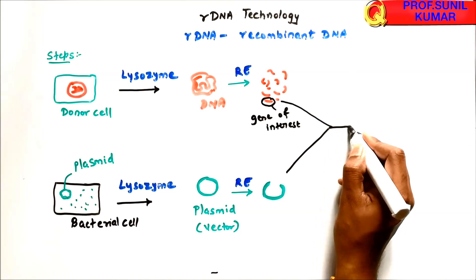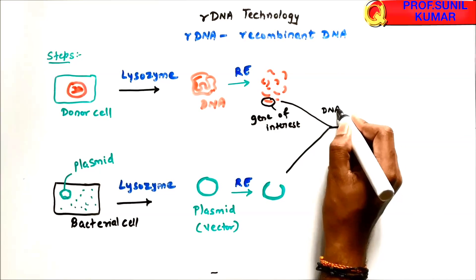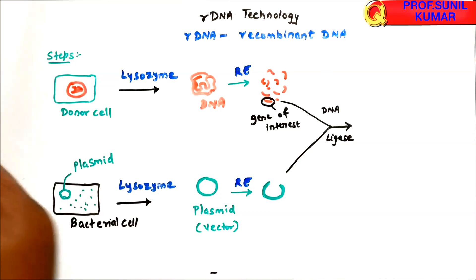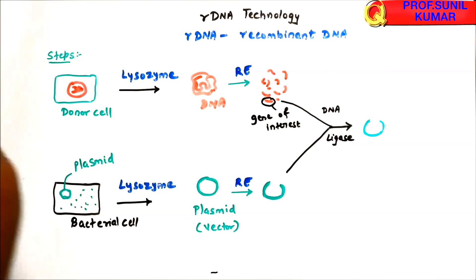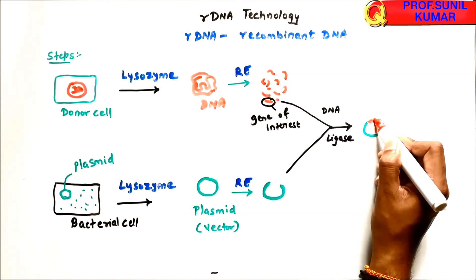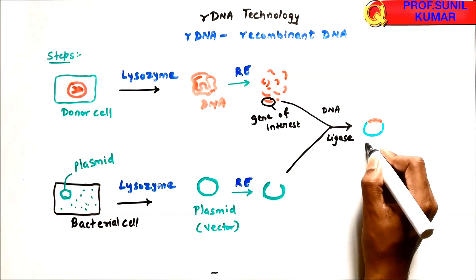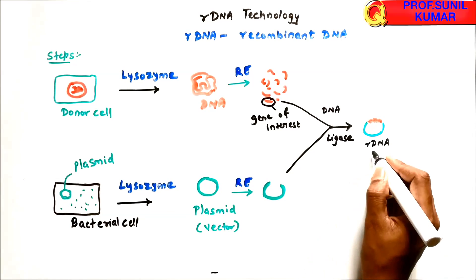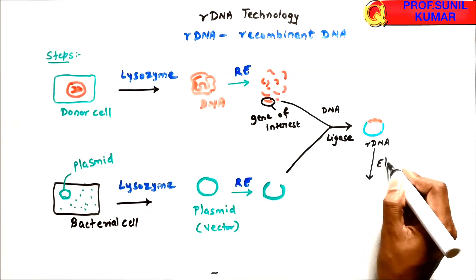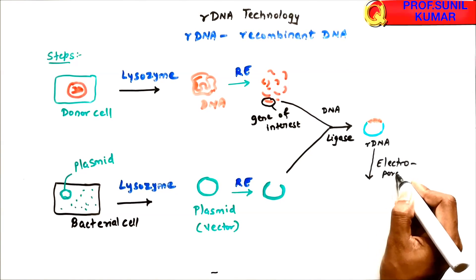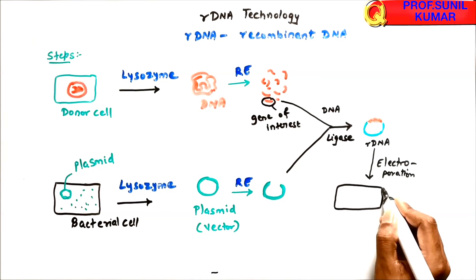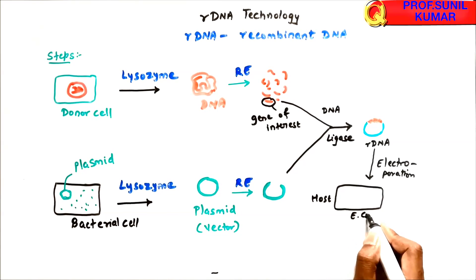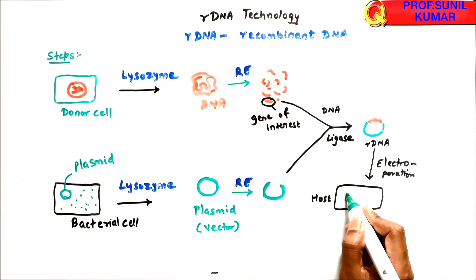The gene of interest and the plasmid are brought together and joined with the help of the enzyme DNA ligase. The resulting plasmid now carries the gene of interest. This plasmid that we have formed is called rDNA. This rDNA is then introduced into the host using a technique called electroporation, which applies a mild electric shock.